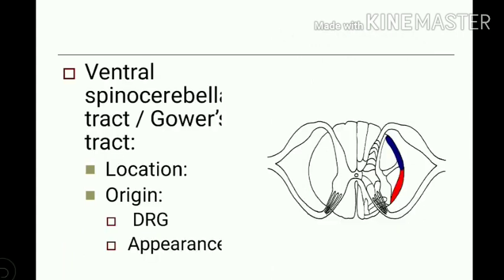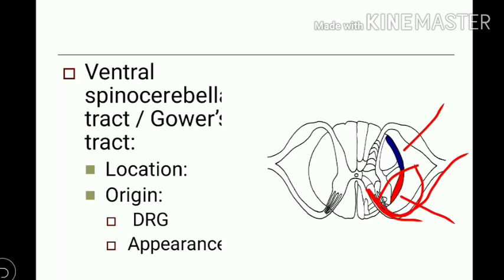Now let us discuss the ventral spinocerebellar tract, also known as Gower's tract. This tract is located in the lateral periphery of the lateral white funiculus of the spinal cord. It is located anterior to the dorsal spinocerebellar tract and posterior to the ventral root.